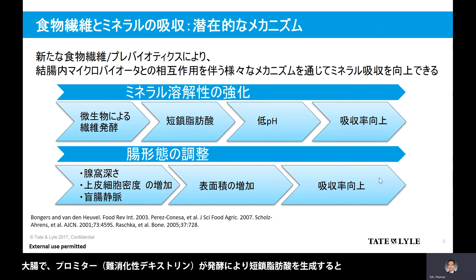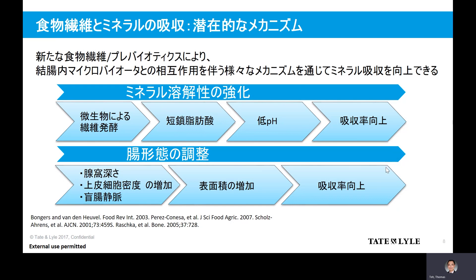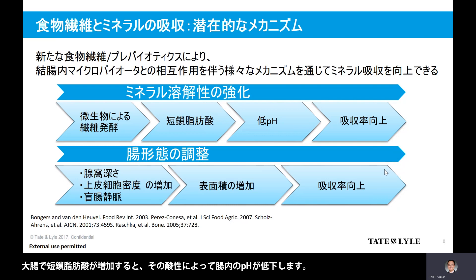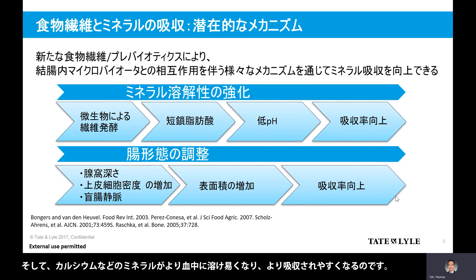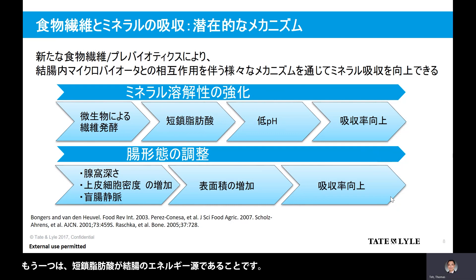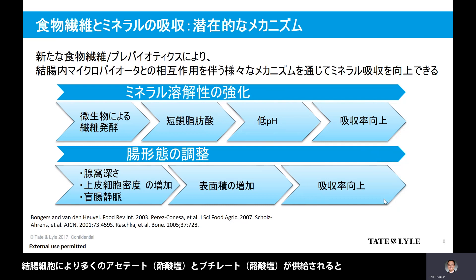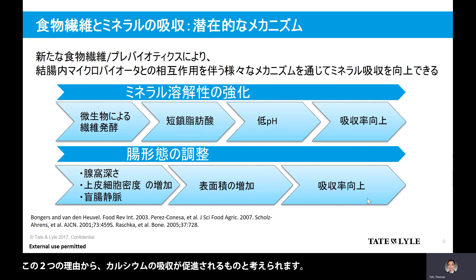Applying the same theory that soluble corn fiber Promitor is fermented in the large colon producing short-chain fatty acids, we have seen it to be beneficial when it comes to enhancing calcium absorption. When the amount of short-chain fatty acids is increased in the large colon, the acidity lowers the pH in the gut. Minerals such as calcium become more soluble due to the lowering pH and are more readily absorbed. The second theory is that short-chain fatty acids serve as an important energy source for the colon. When the colon is better nourished with butyrate and acetate, the functionality of the colon improves, and we have seen that the colon better maximizes its surface area, which is another theory explaining why nutrients are better absorbed.